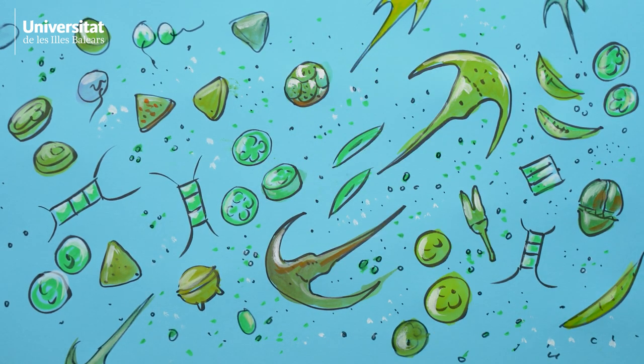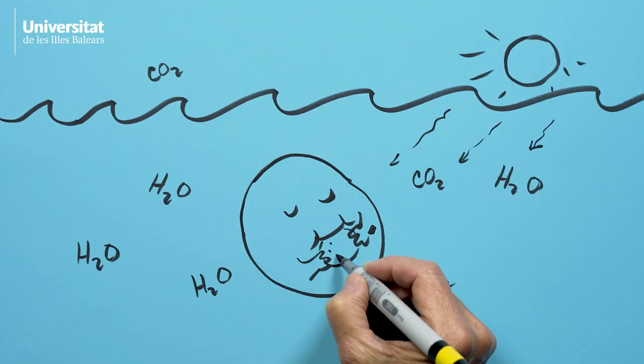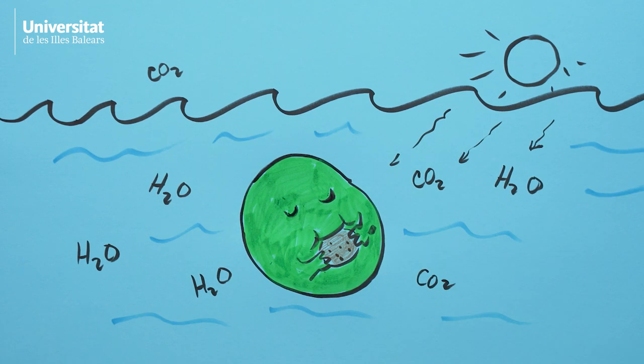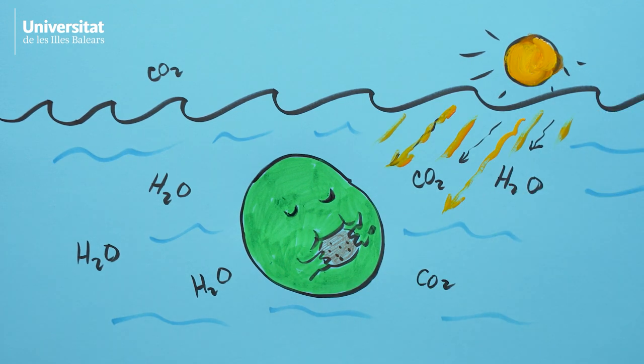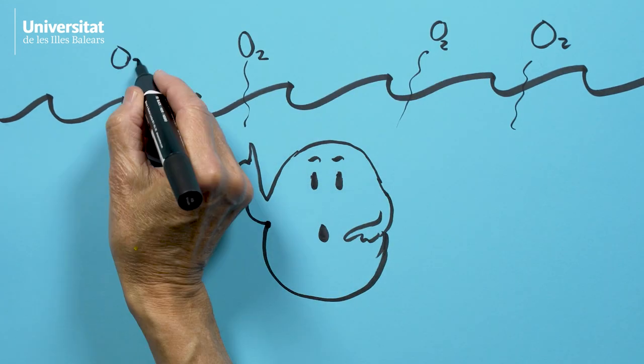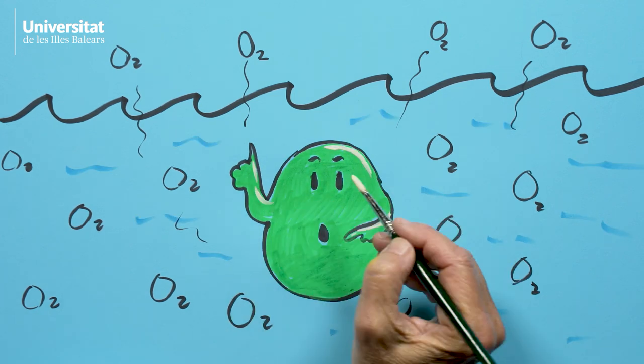She's especially abundant in nutrient-poor waters, which happen to be where tuna like to go to reproduce. Here we see her basking in the sun and feasting on carbohydrates that she makes out of CO2 and water. And Prochlorococcus just reminded me that on top of that, she and the rest of the phytoplankton produce 50% of the oxygen we breathe.